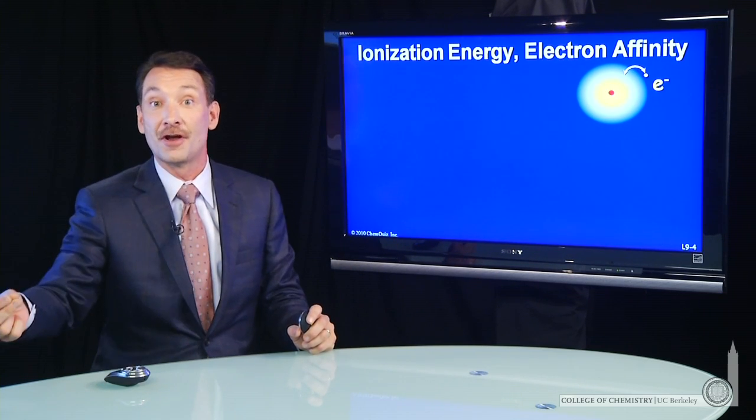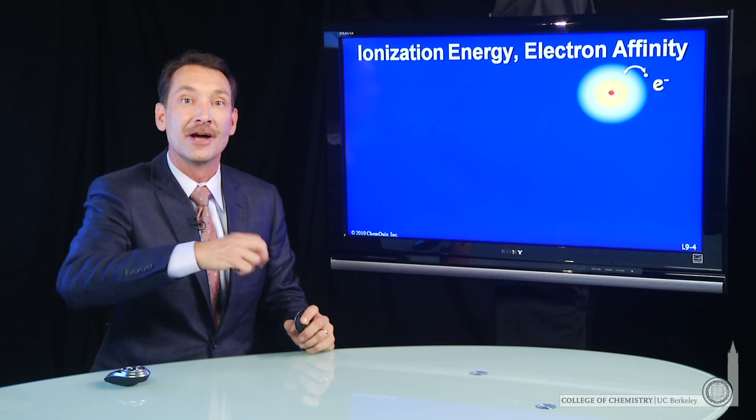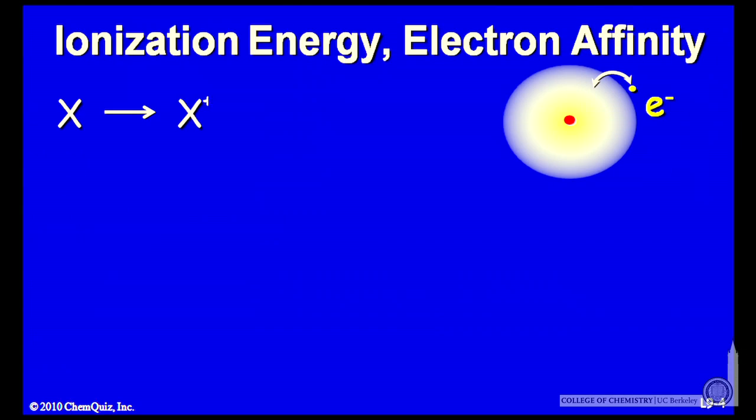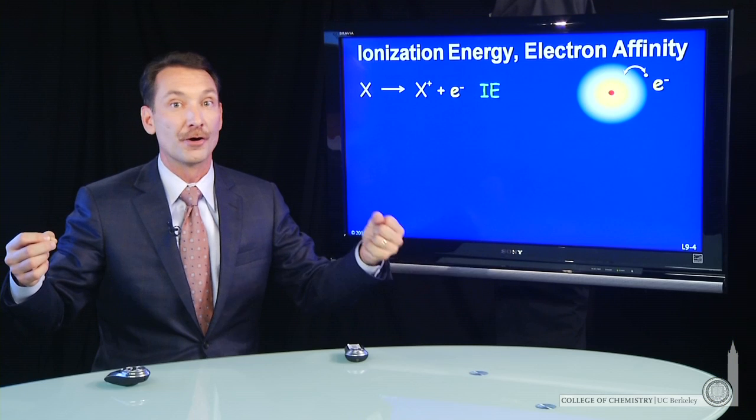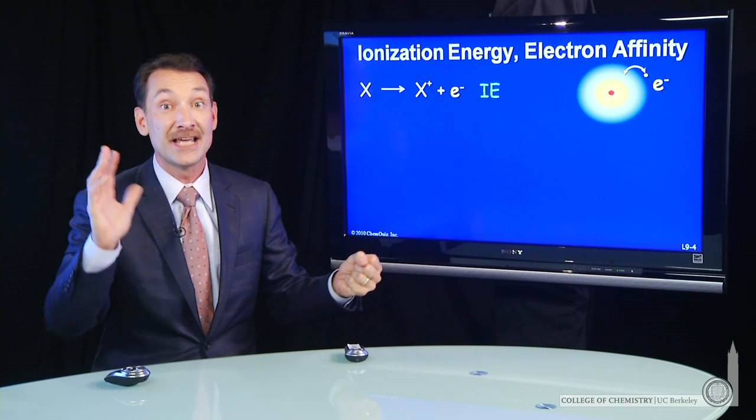So either taking an electron off or forcing an electron in are the two reactions we can look at. For ionization, that's removing an electron from a species, that energy is always positive. I always have to put energy in to remove an electron from an ion or an atom. And that's something you can take to the bank.